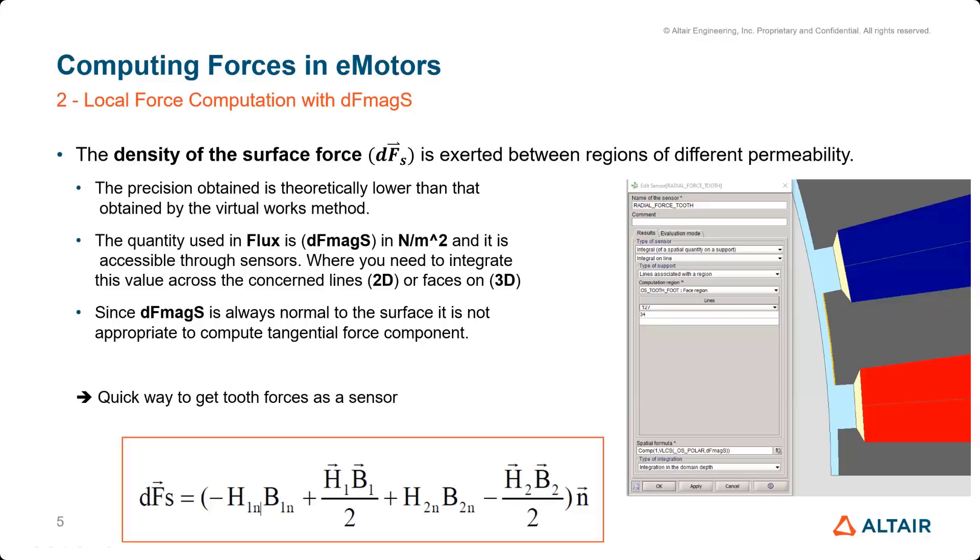And here you can see an example how to create a sensor, selecting these two lines and selecting the dFmagS quantity. Here we use a specific formula to convert it into the first components in the cylindrical coordinate system. So you can use this type of formula in order to create that. I think there's also a macro to create this sensor if you need to create them quickly.